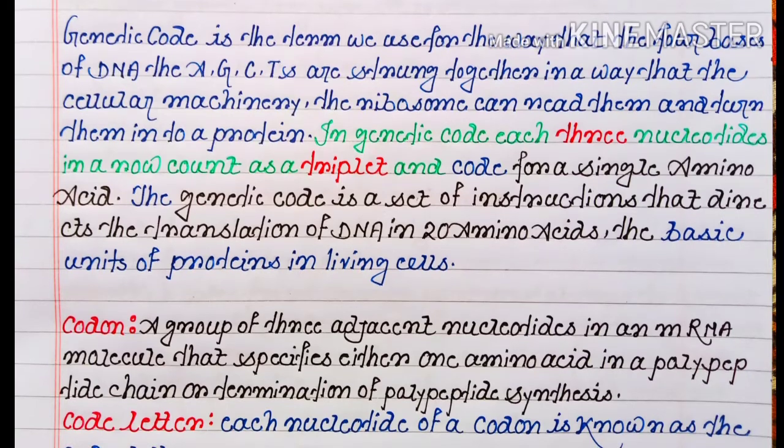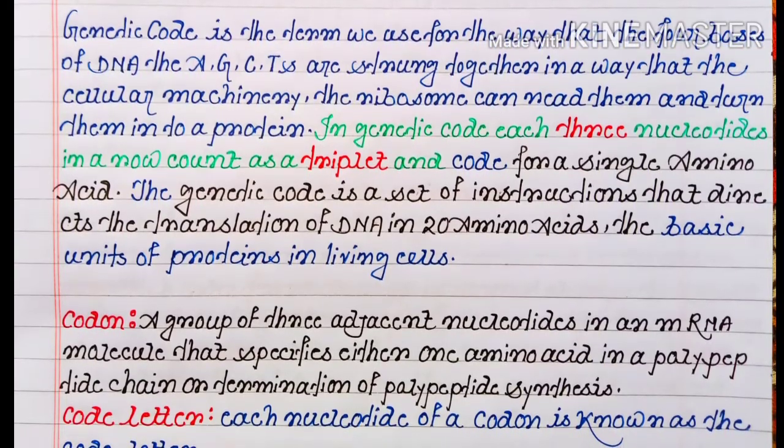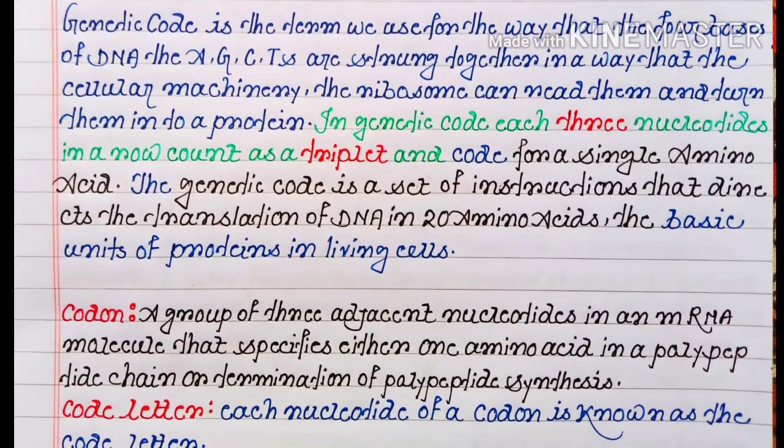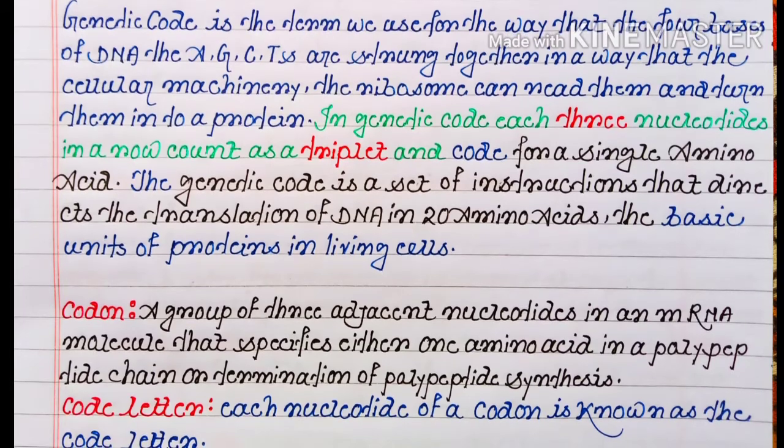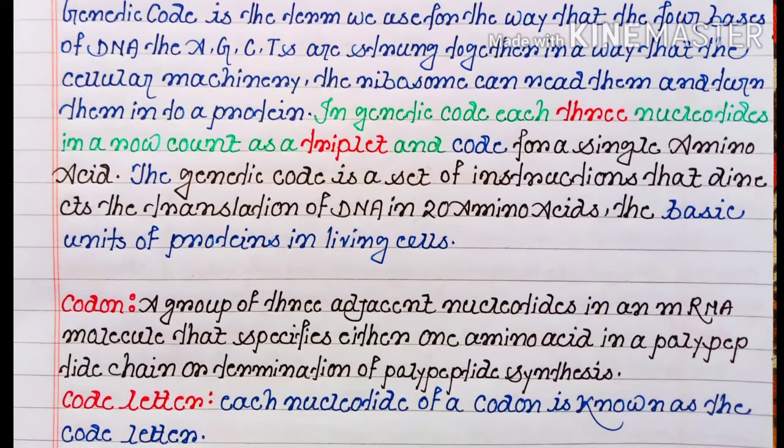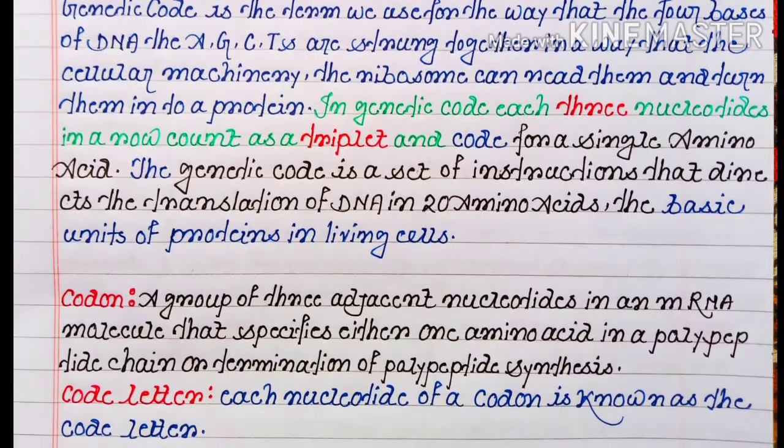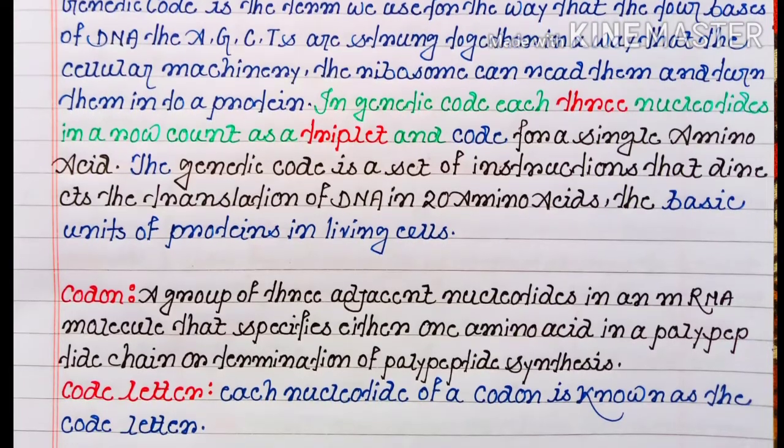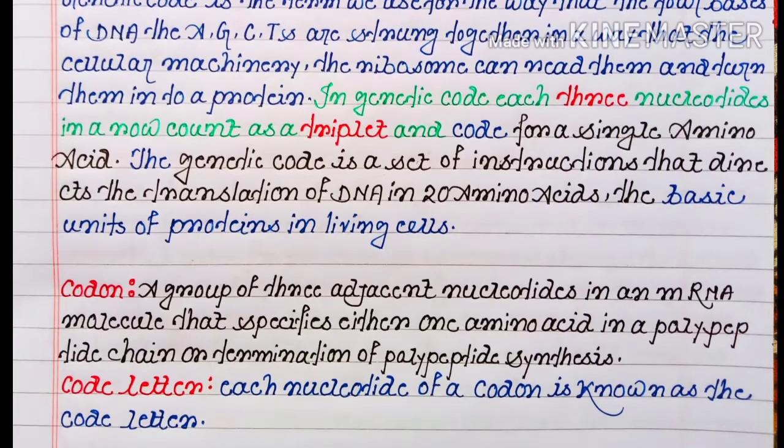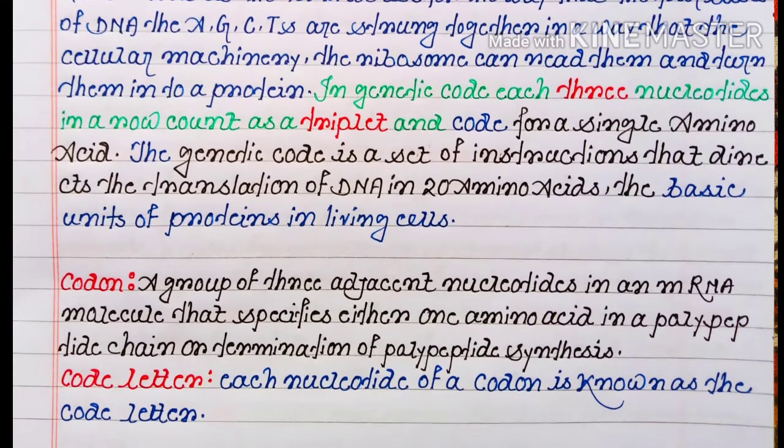Next, the codon: a group of three adjacent nucleotides in an mRNA molecule that specifies either one amino acid in a polypeptide chain or termination of polypeptide synthesis. Next, the code letter: each nucleotide of a codon is known as the code letter.